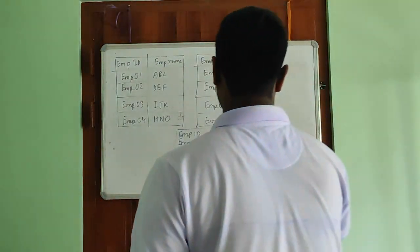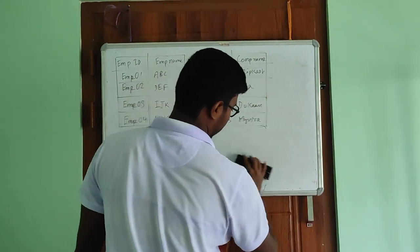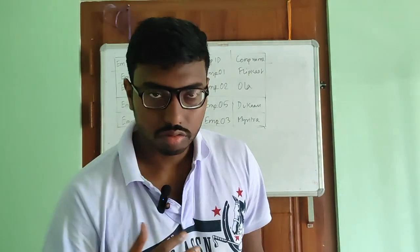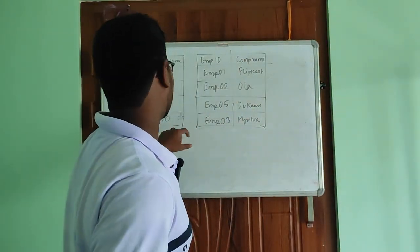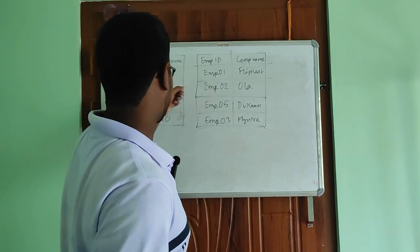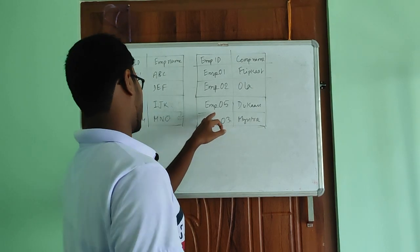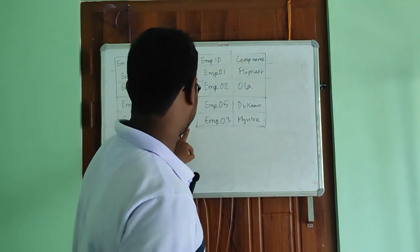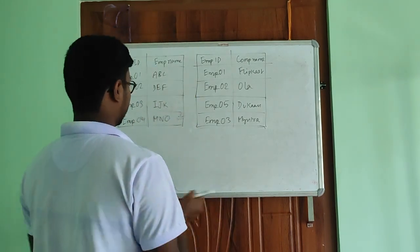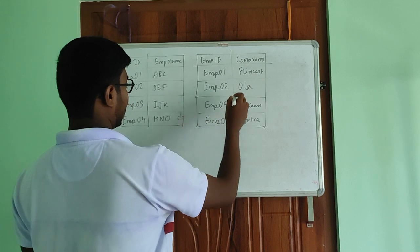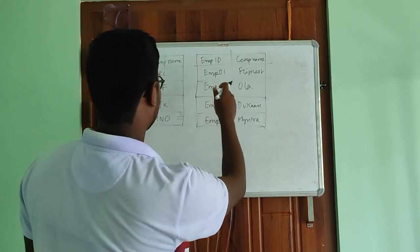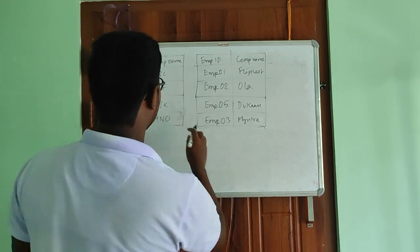Now let us talk about the full outer join using the same tables. There is a left outer join, right outer join, and full outer join. In a full outer join, every record from both tables will be listed — employee1, employee2, employee3, employee4, employee5 — everything will be fetched. For uncommon records, such as employee04 not being present in the employee table, the employee name will be null. This is the full outer join.